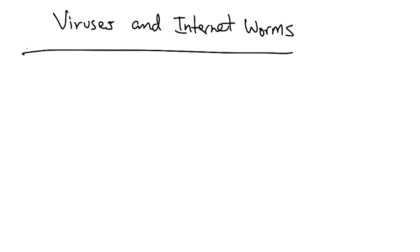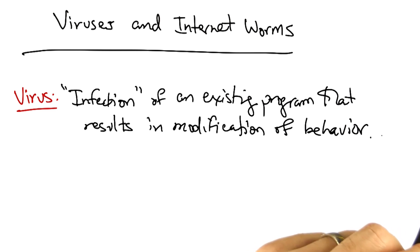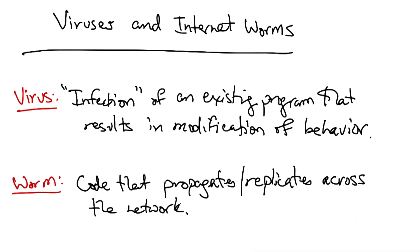In this lesson, we will talk about viruses and internet worms. Let's first define what a virus is and then define what a worm is. A virus is effectively an infection of an existing program that results in the modification of the original program's behavior. A worm is code that propagates and replicates itself across the network. A worm is usually spread by exploiting flaws in existing programs or open services.